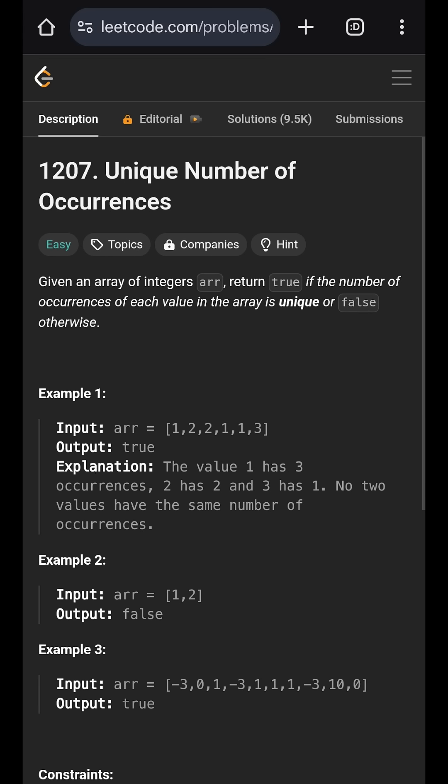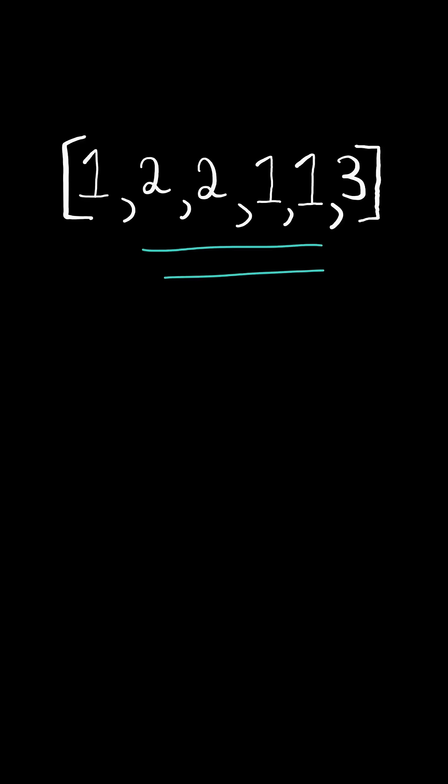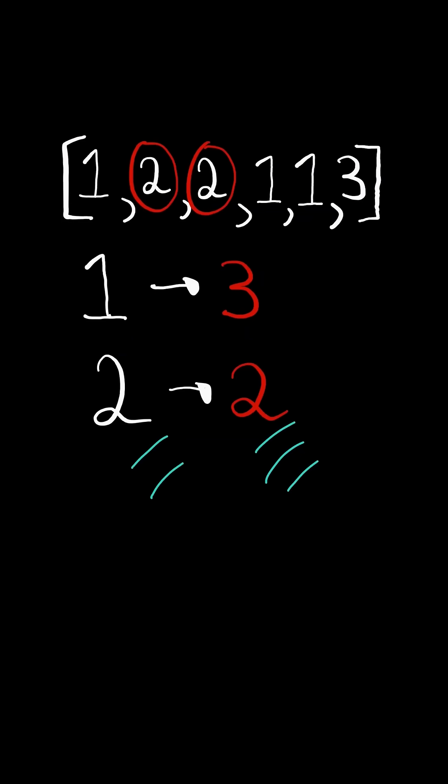Unique number of occurrences. Given a list of numbers, count the occurrences of each number. One occurs three times, two occurs two times, and three occurs one time.